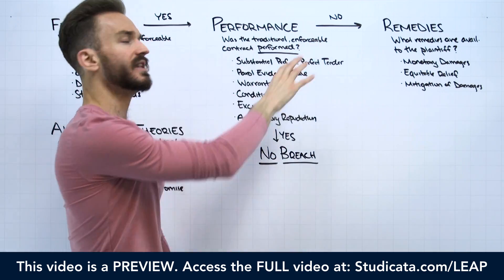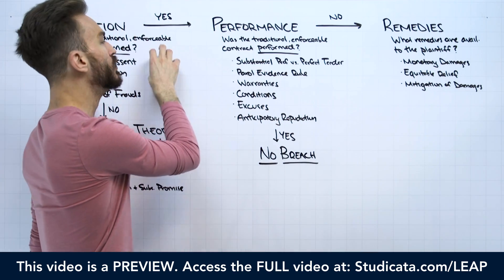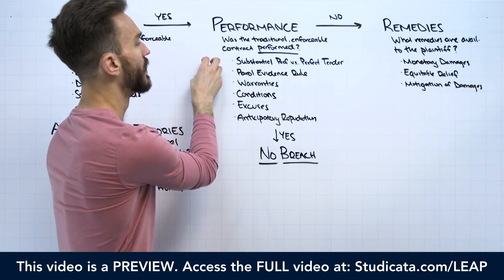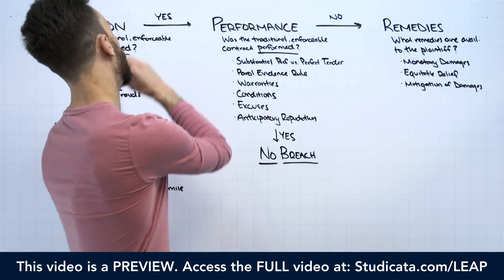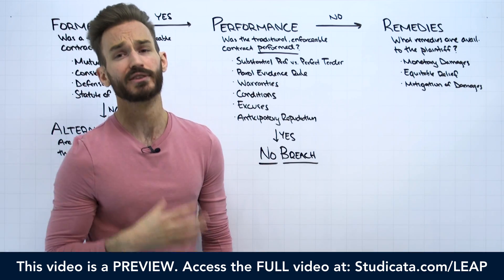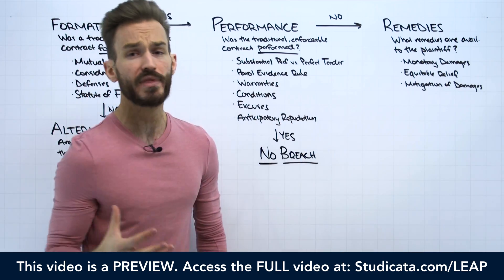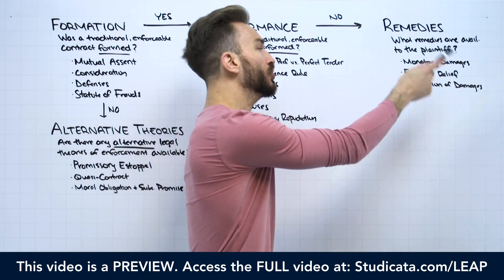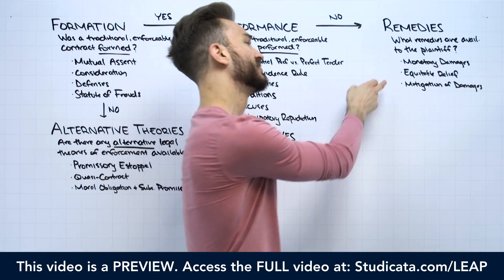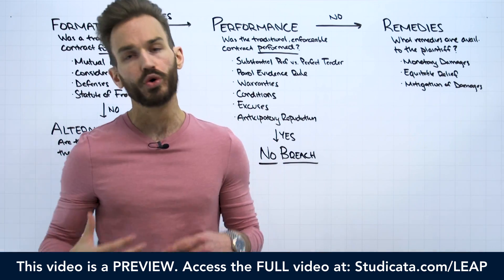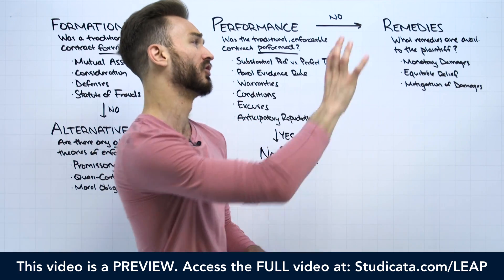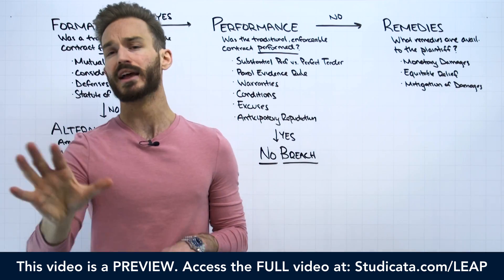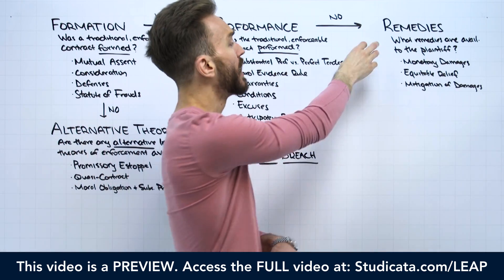To end the analysis — to understand the flow — if we decide we have a traditional enforceable contract, and we know that one side has failed to perform their duties under the contract, that side who failed to perform is in breach. That means the plaintiff is entitled to remedies. We have monetary damages and equitable relief, and you will go through that depending on what the call of the question is. Also, there's this idea that the plaintiff has the duty to mitigate damages. We'll get there when we talk about remedies.